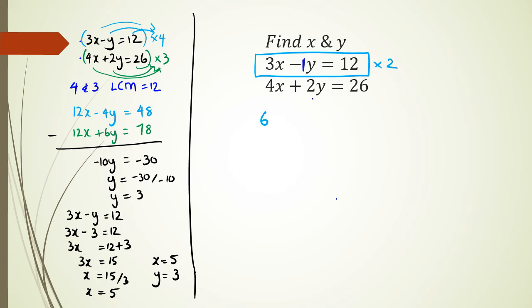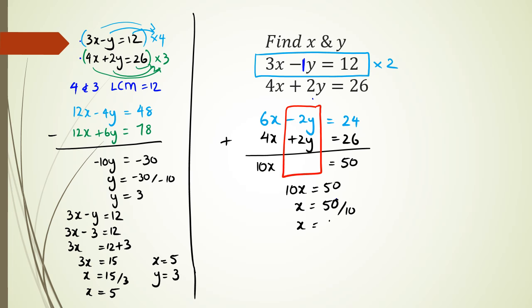Now if I was to multiply this by 2, I get 6x minus 2y equals 24. And then in the bottom, I've got 4x plus 2y equals 26. Now because it's having a look at the y coordinates, it's negative 2y and positive 2y, and to eliminate it, I just need to add them. So 6x plus 4x is 10x. 24 plus 26 is 50. So I have 10x equals 50, and x is equal to 50 divided by 10. So therefore, x is equal to 5.